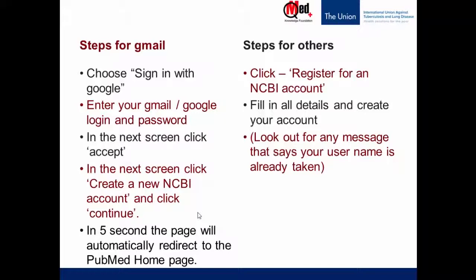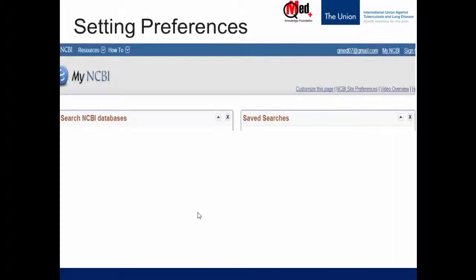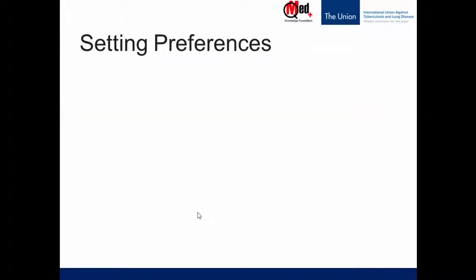You can create an account either using your Gmail or by registering for an NCBI account directly. Once you do this, we'll show you the first advantage of creating your NCBI account — you can set certain preferences. Just below My NCBI, you can see that you're signed in, and below that there are some links. Click NCBI site preferences.